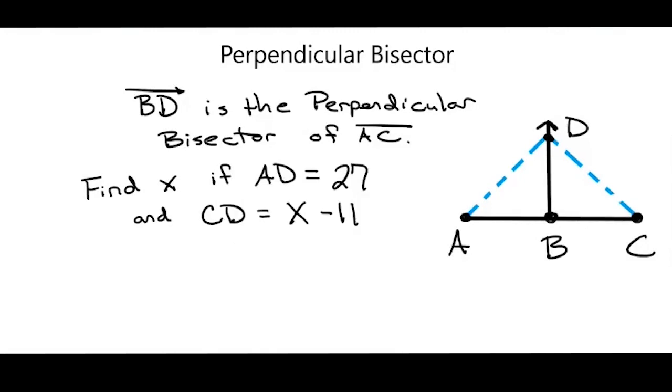Now I know that AD is 27 and CD is x minus 11, and I need to find the value of x. Well, I know that x minus 11 equals 27. So I will add 11 to both sides of the equation. My 11s cancel here and I'm left with x equals 38. So for this one, x equals 38.